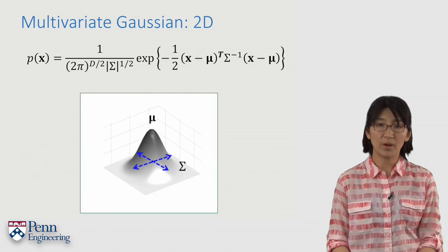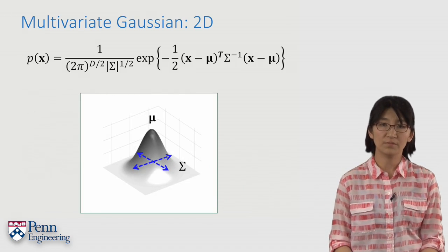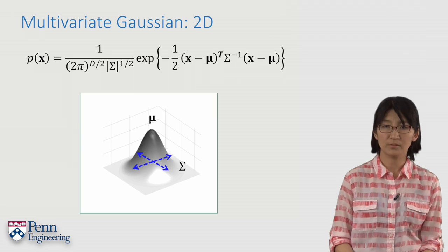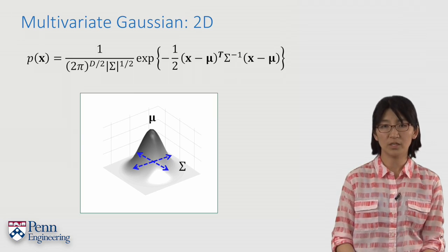Today, we have learned about the multivariate Gaussian density function, and we graphically examined the parameters, μ and sigma, via 2D cases.